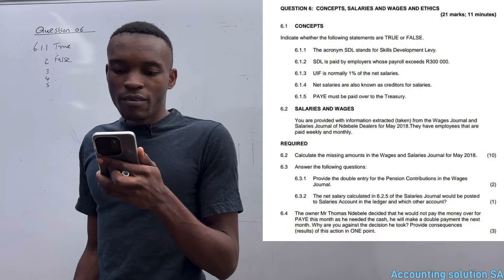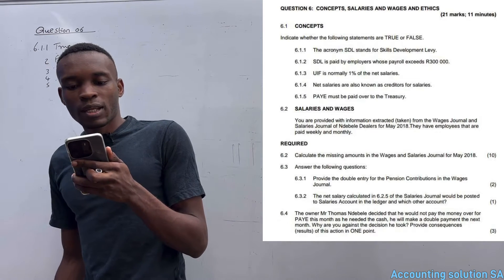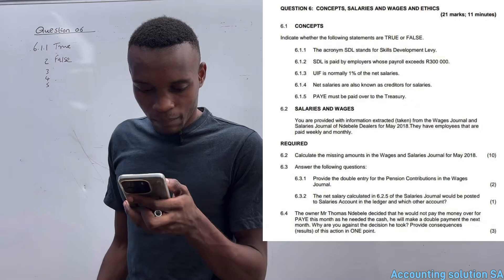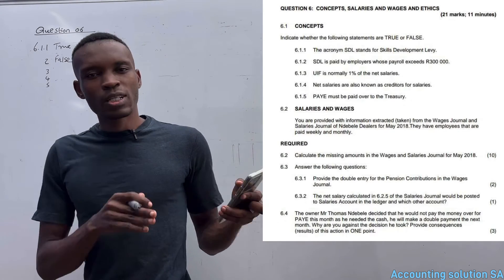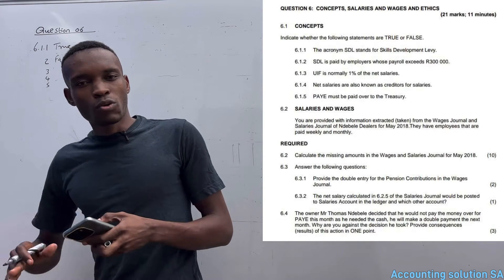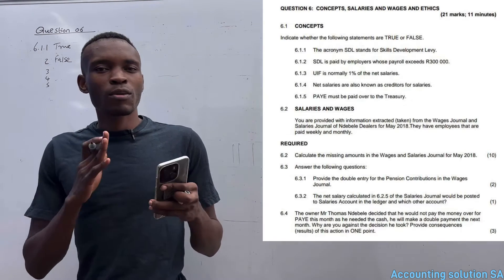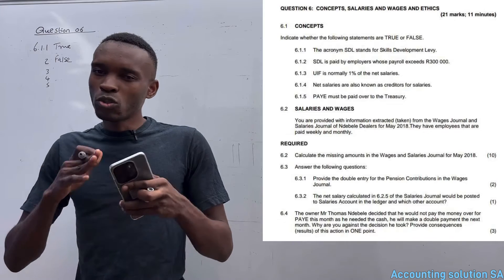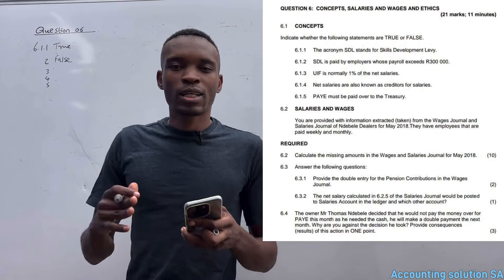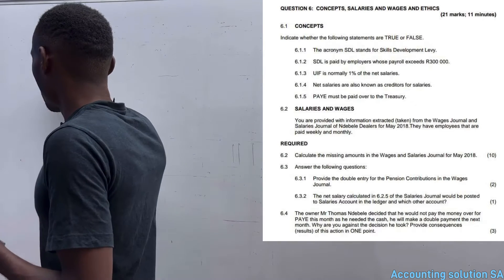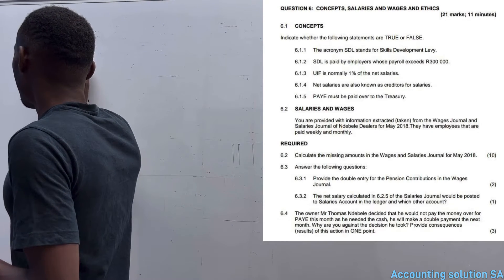6.1.3 - UIF is normally 1% of the net salary. Is it net salary? Yes, it's 1%, but it's not net salary, it's gross salary. In other words, we have to calculate 1% of gross salary, not net. Remember, net already deducted deductions. So the answer is false because they said net and it must be gross.